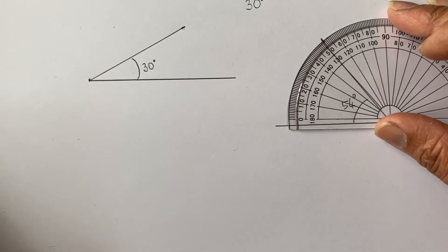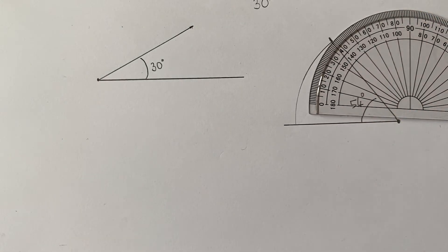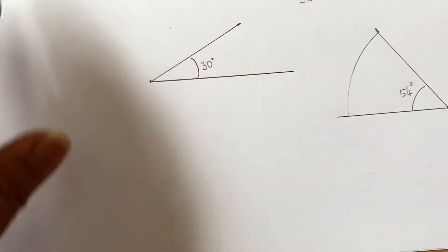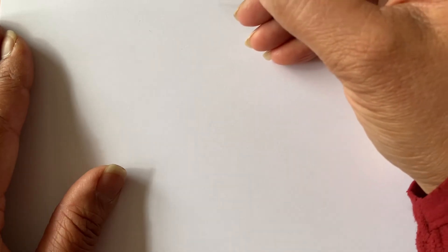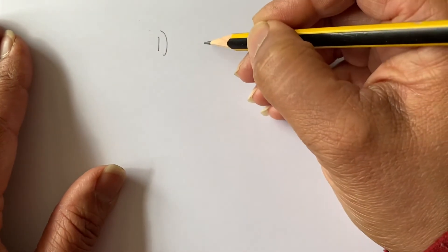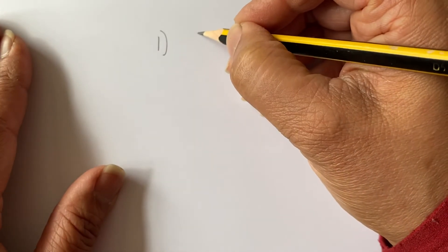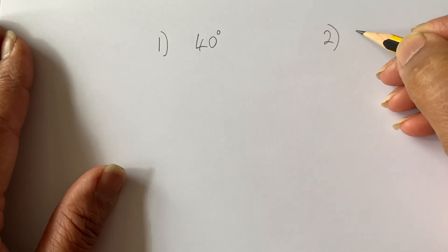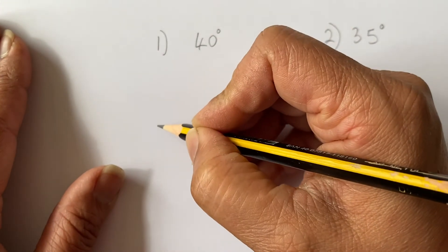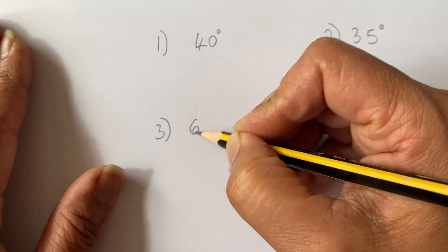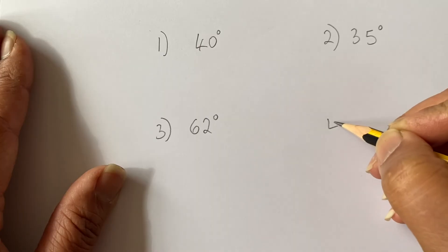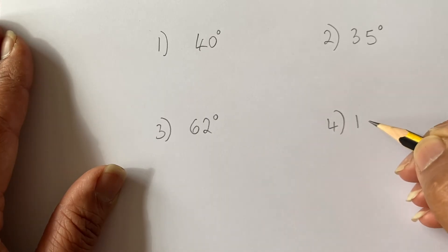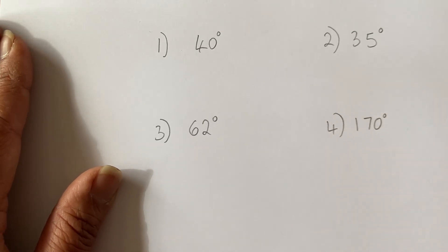Now, I hope this helps you. What I'd like you to do now is have a go and do some examples. You always start off with a line. Let's give you some questions to do. Number one, you can draw 40 degrees. Number two, try doing 35 degrees. Number three, 62 degrees. And number four, let's try 170 degrees. So have a bash at these and I hope you have some fun.